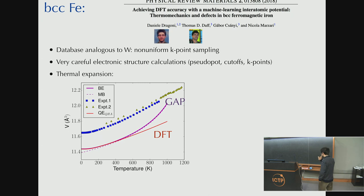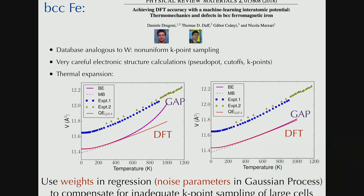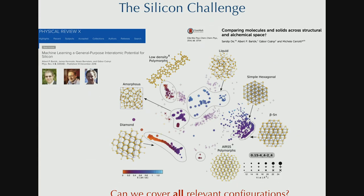And our gap model was okay at low temperature, but really was a bit unstable. And it turned out that we weren't honoring our own promise of being careful enough. Because what turns out that when we use the noise, the weights in the regression to compensate for the inadequate K-point sampling of large cells. Large unit cells being slightly inconsistent with the small ones. Once we fix that, we get a perfect reproduction of the thermal expansion.